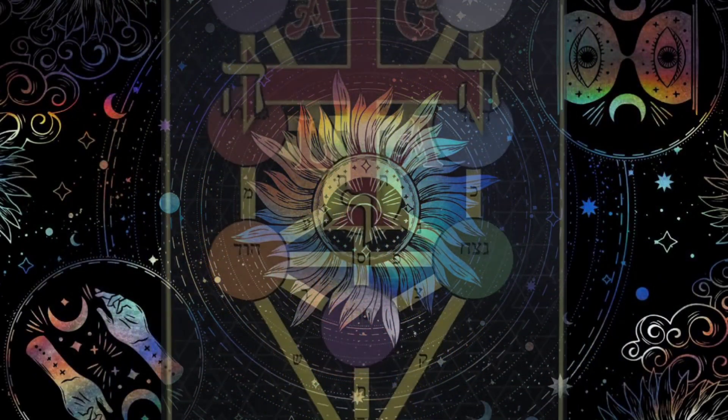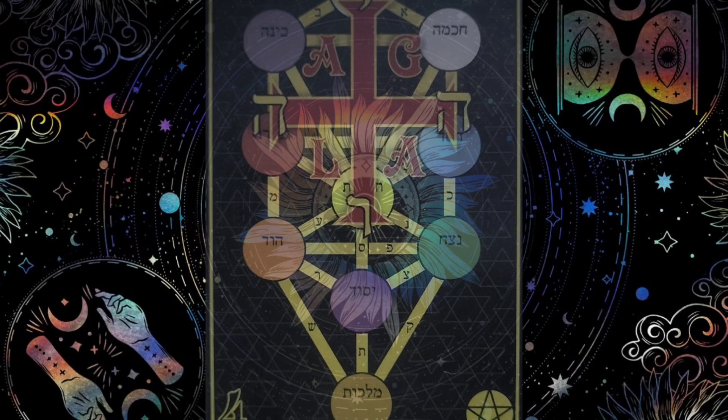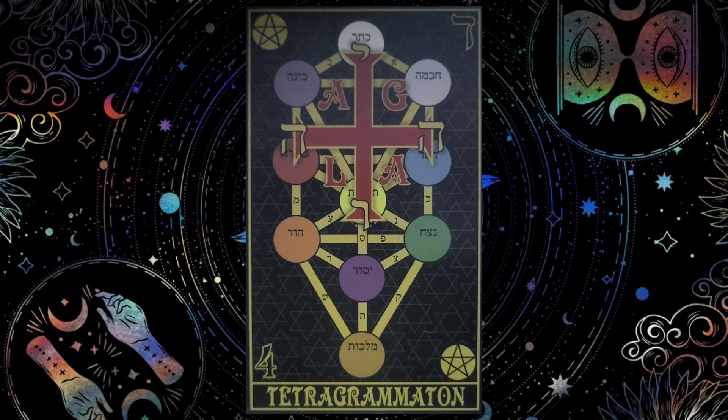The Four of Pentacles card is titled Tetragrammaton and shows the four-letter name of God represented on the tree of the Sephirot, according to the pattern and formula used by Levi, Pappas, and Wyatt.